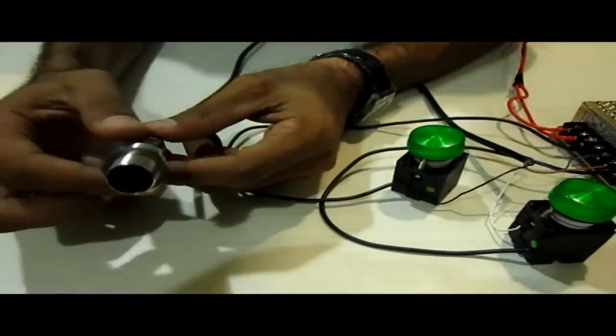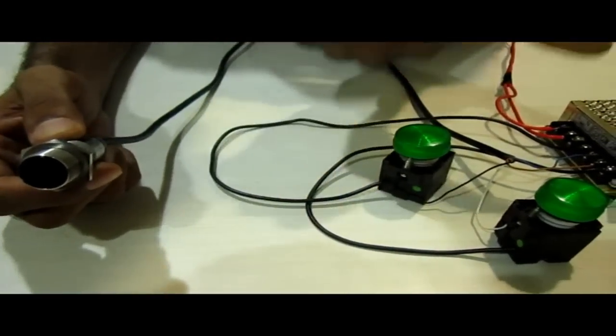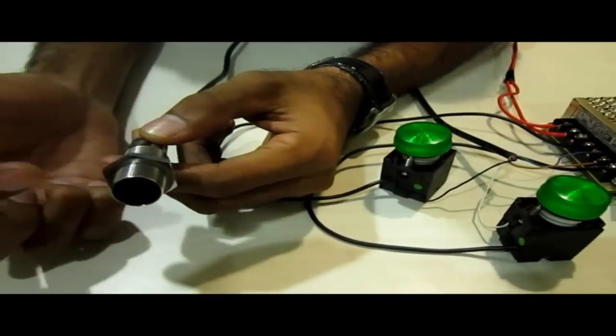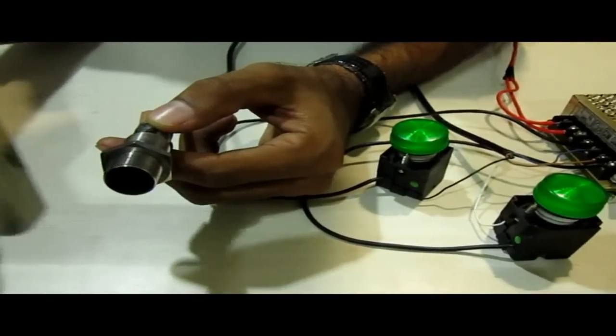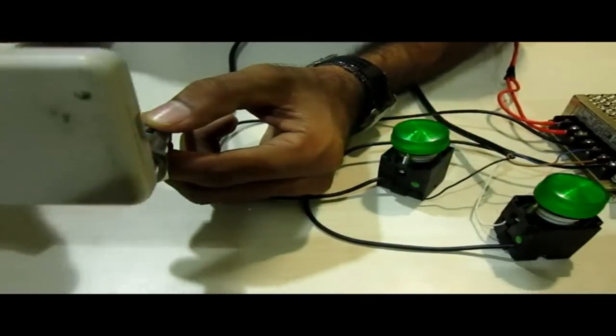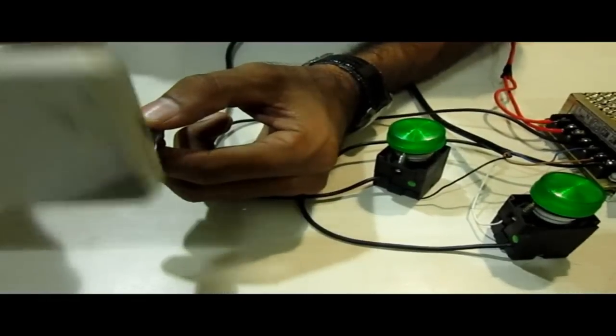The principle is when a sensor is given power from the power supply it is generating some electrostatic field outside its surface. When any object comes in between this electrostatic field it disturbs the electrostatic field because of its dielectric medium.